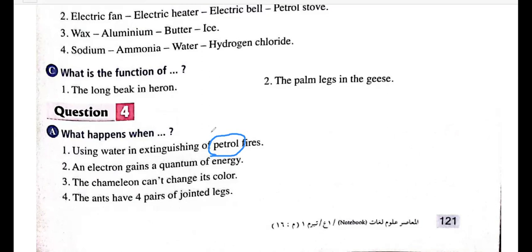When an electron gains a quantum of energy, it will be transferred to a higher energy level. Think of it like stairs — the electron moves up. This causes the atom to become excited. So when an electron gains energy, it transfers to a higher energy level and the atom becomes excited.